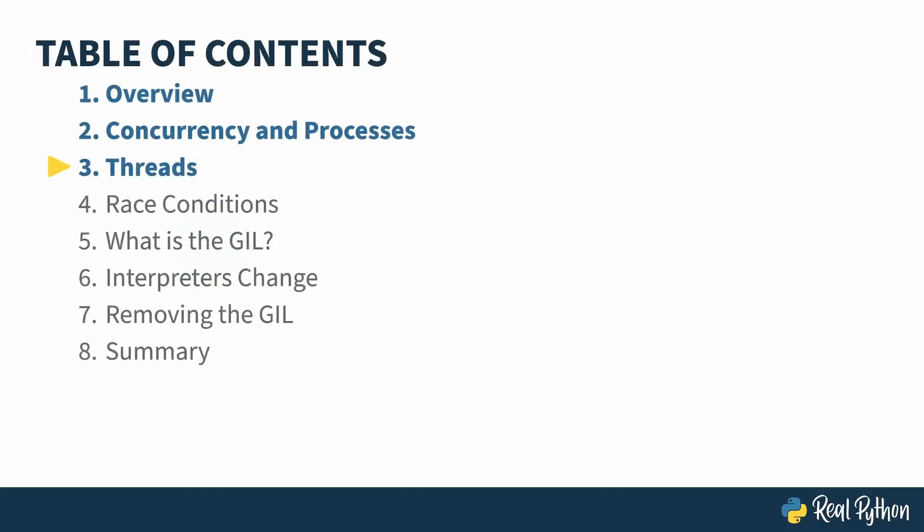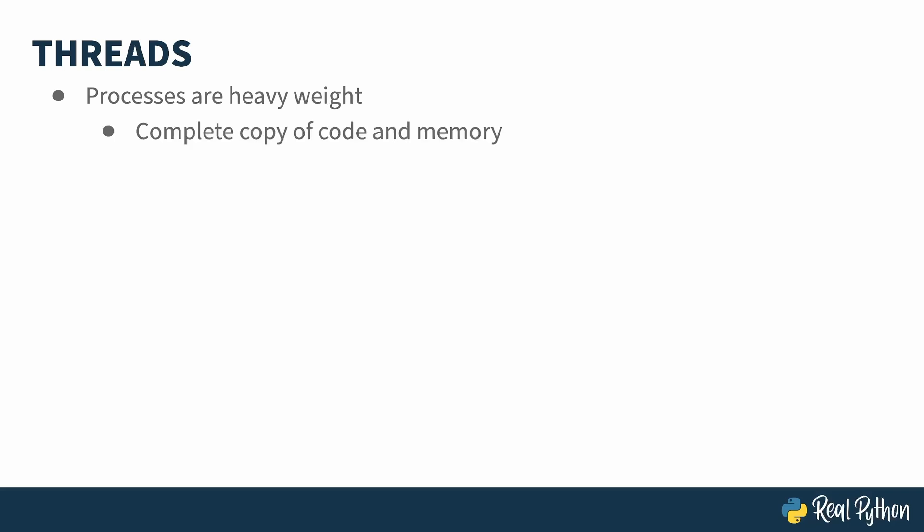In the previous lesson I started my introduction to concurrency by explaining processes. Processes are heavy — having a complete copy of the code and their own chunk of memory means a lot of allocation and resources. And because the memory isn't shared between processes, communication requires special code — that chat room I mentioned — which requires special coding. This heaviness caused operating system designers to come up with other ways of doing concurrency.